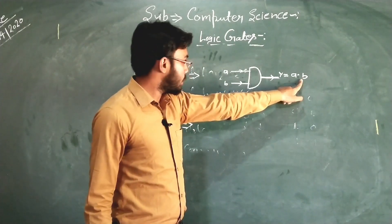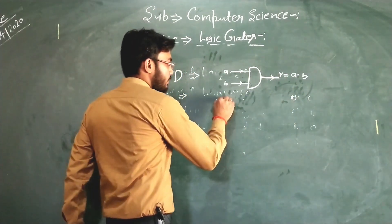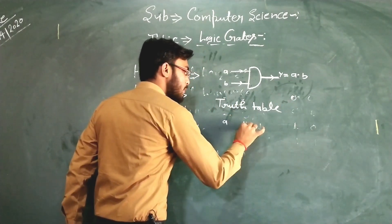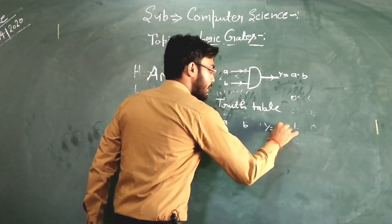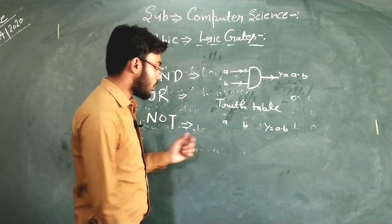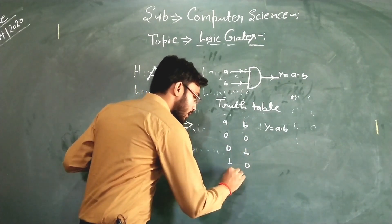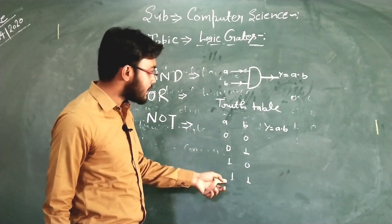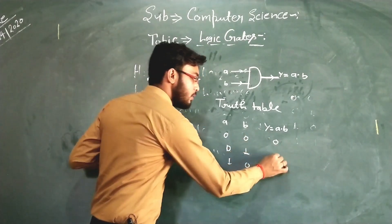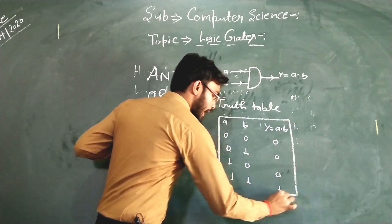The working of this gate we will understand by its truth table. The first input is A, the second input is B, and the output is Y = A · B. With two inputs, the possible combinations are: 0,0 → 0; 0,1 → 0; 1,0 → 0; and 1,1 → 1. Here 0 means off and 1 means on. The output follows multiplication: 0·0=0, 0·1=0, 1·0=0, 1·1=1. This is the truth table for the AND gate.